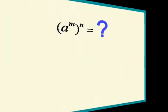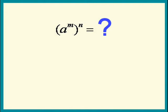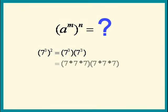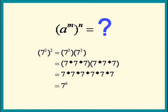Next let's look at a to the m raised to the nth power. We'll use seven cubed, the whole thing squared, as our example. Seven cubed squared means seven cubed times seven cubed, and each seven cubed is seven times seven times seven. Remove the parentheses and we see seven to the sixth power. So when we have a power raised to a power, we multiply.